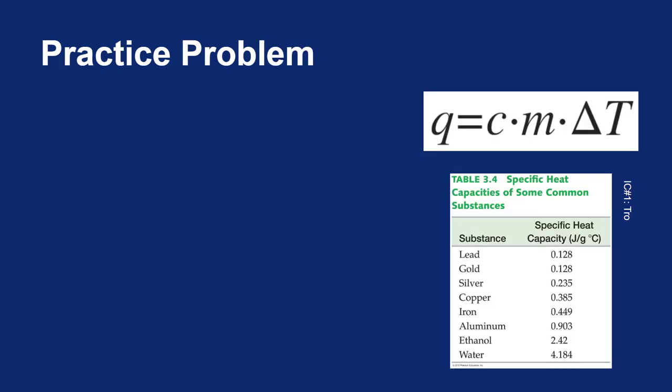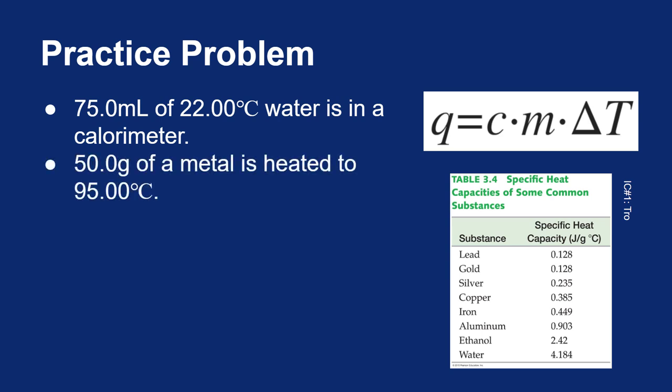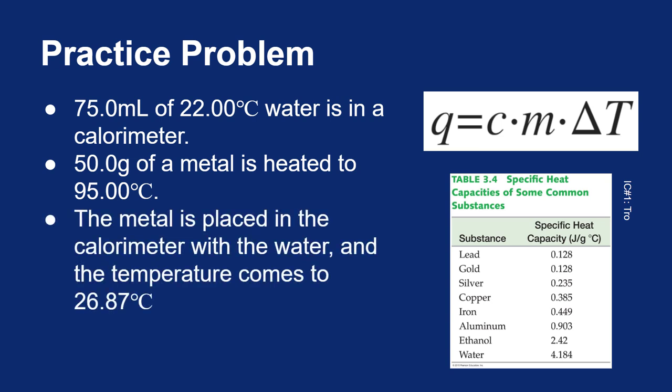Let's take a look at a practice problem. We're going to use our equation Q equals Cm delta T and rely on the specific heat values from the text. Let's say I put 75 milliliters of water in a calorimeter and measure the temperature of that water to be 22 degrees Celsius. I'm going to put 50 grams of a metal and heat that metal to 95 degrees Celsius. The metal is placed in the calorimeter with the water and the temperature comes to 26.87 degrees Celsius. I would like to figure out what metal this could be.